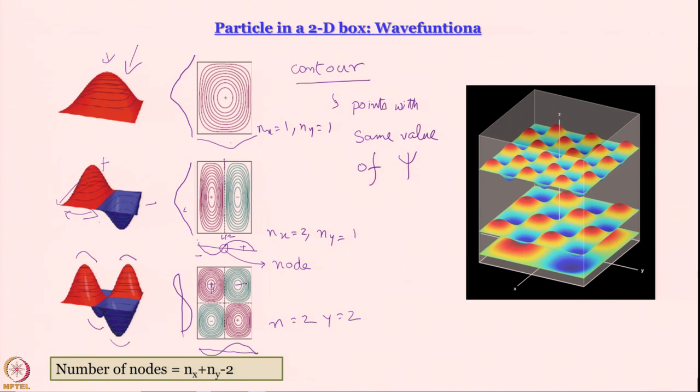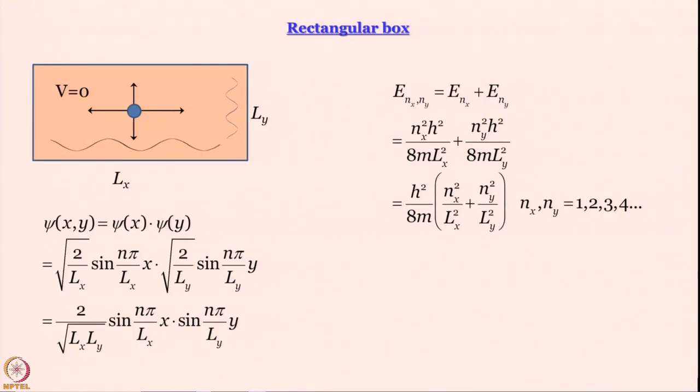What about this wave function? This is n equal to 2, y equal to 2. Now we have a change in sign here and here also we have a change in sign. So we have 4 quadrants: a peak, a trough, a peak, another trough and this is how you draw the contours. Remember in contours, in order to show what is the sign, you either use different colors or use explicitly you write the signs or better still you do both. This is how you depict 3 dimensional surfaces.